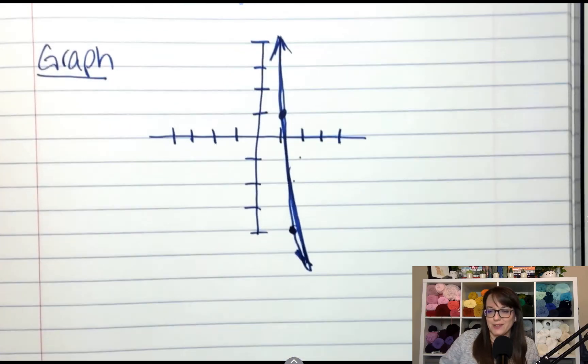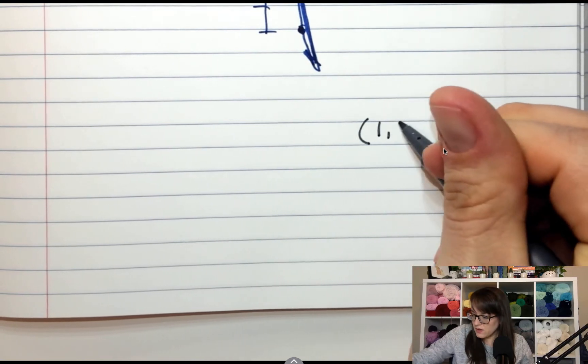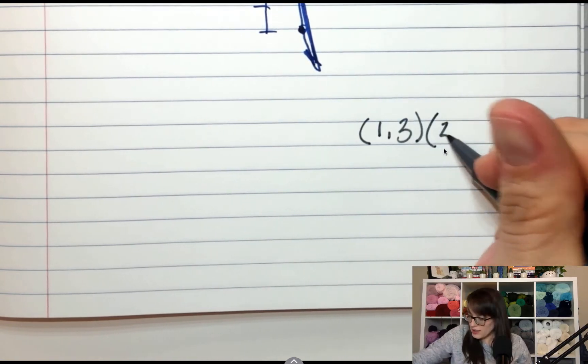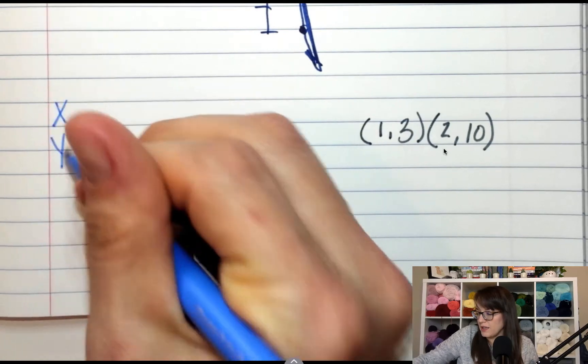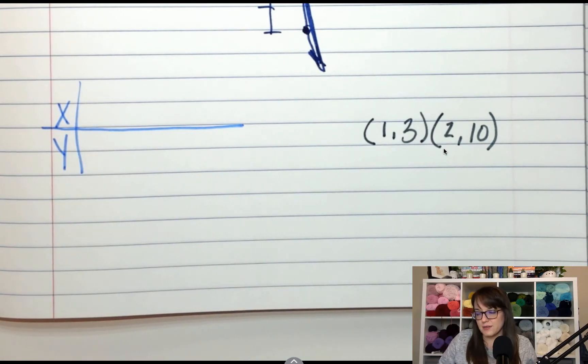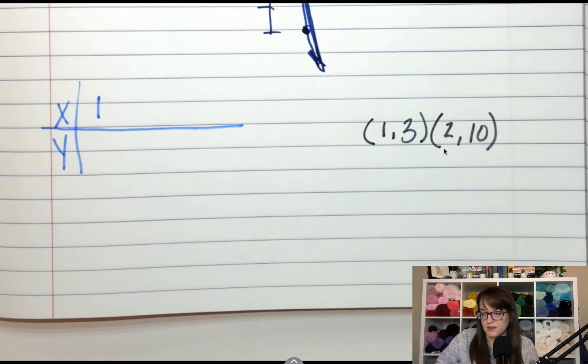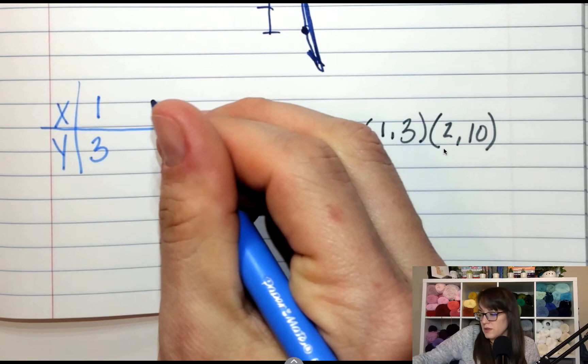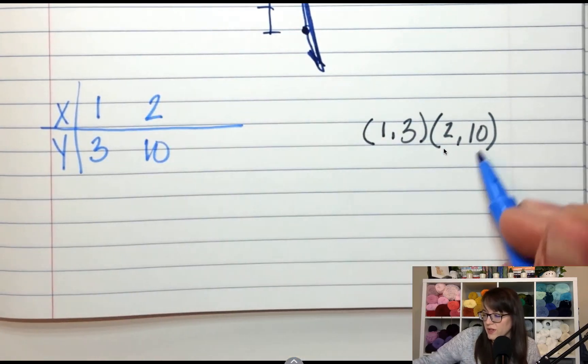Let's try another one. Get rid of my ugly graph. Okay. If you had the coordinates (1, 3) and (2, 10), let's make a table first. So I've got X and Y. What's my first X? 1. What's the Y that goes with that X? 3. What about my second X? 2. And how much is Y when X is 2? It's 10. It's right here. (2, 10).